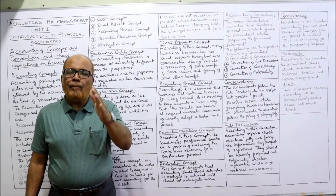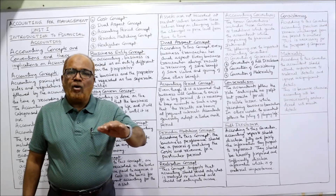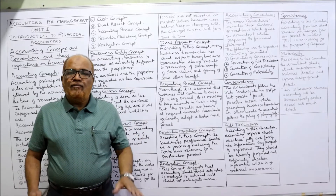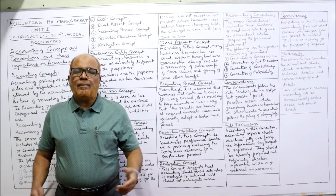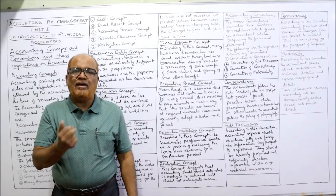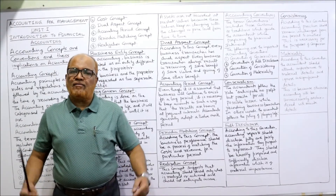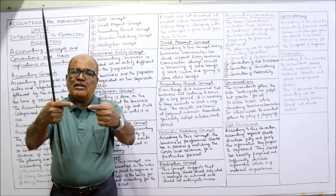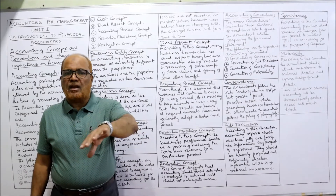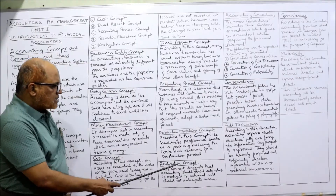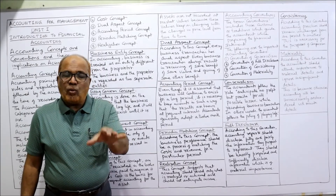Next is the periodic matching concept. In order to ascertain profit, we must match the revenue with the cost during the accounting period — how much revenue is earned and how much cost is incurred. For example, if during a particular year revenue is 10 lakh rupees and cost is 8 lakh rupees, we match them: 10 lakh minus 8 lakh gives a profit of 2 lakh rupees. That is the matching concept.